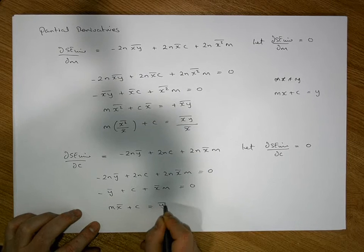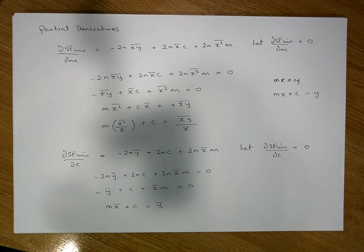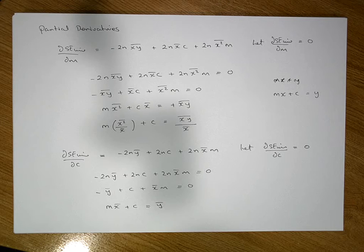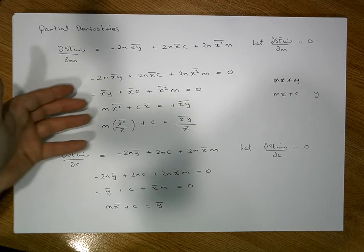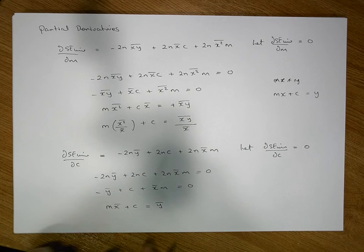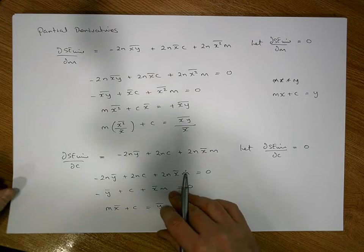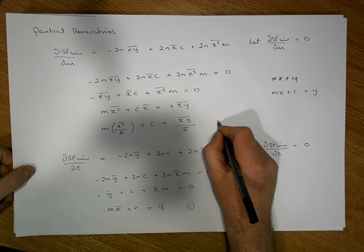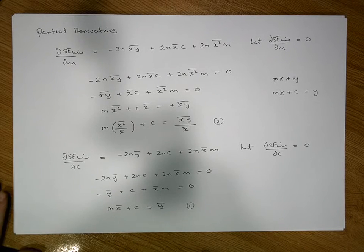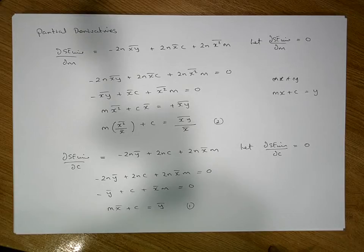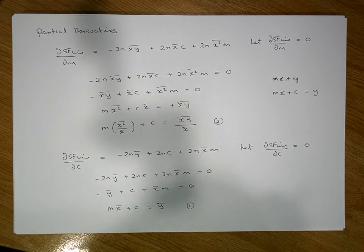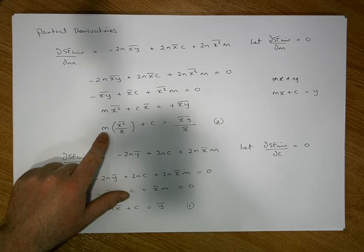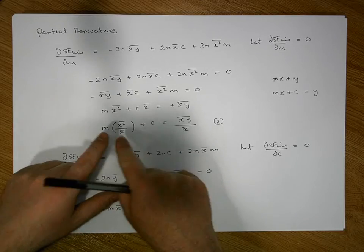This becomes: mx̄ + c = ȳ. So now we have two equations. We've minimized the error and obtained two lines. What we'd like to do is solve for m and c. Once we've solved for m and c, we have an expression that allows us to calculate the slope and the intercept given a set of n observations.